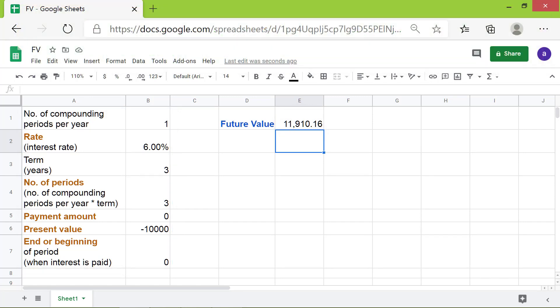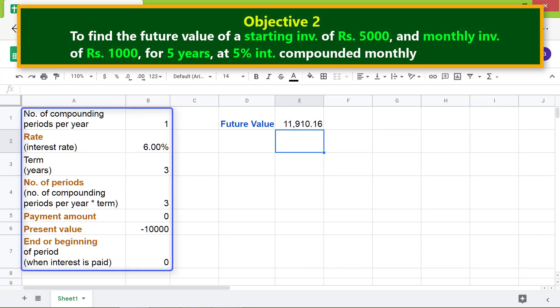Now let's work on the second objective. First, let's change the number of compounding per year to 12 assuming monthly compounding. Let's change the rate to 5%, investment term to 5 years.